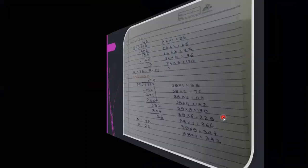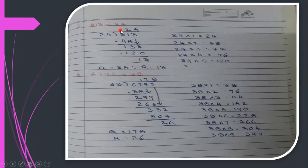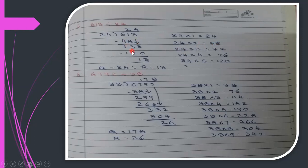Next, 613 divided by 24 — a 3-digit number divided by a 2-digit number. Write the 24 table: 24×1=24, 24×2=48, 24×3=72, 24×4=96, 24×5=120. Take the first two digits: 61. 24×2=48, so 61 minus 48 is 13. Bring down 3 to get 133. 24×5=120, so 133 minus 120 is 13. Quotient is 25 and remainder is 13.